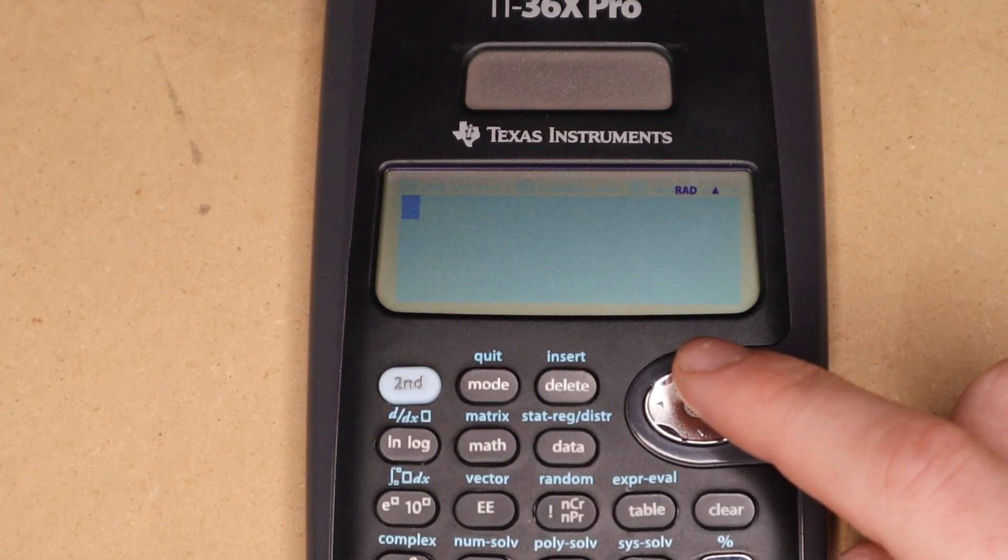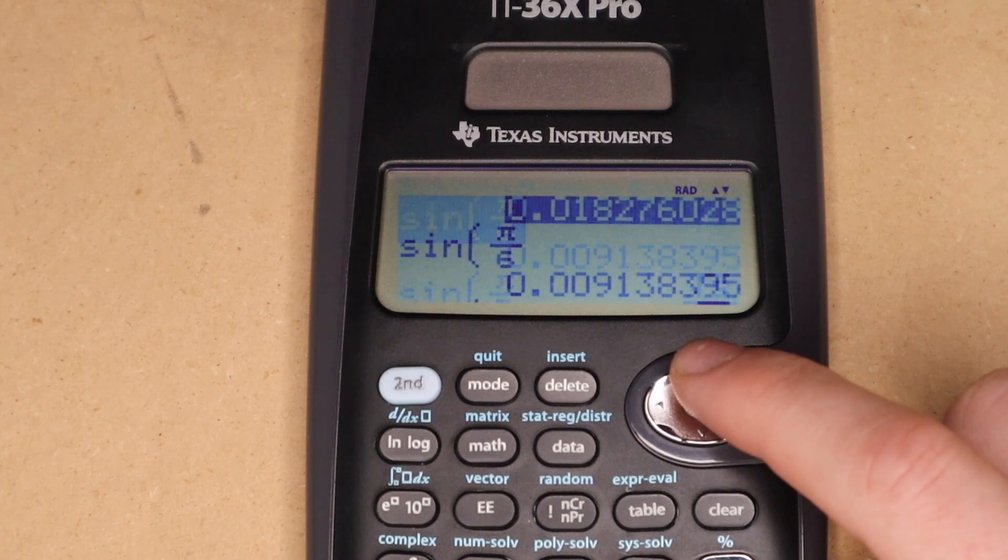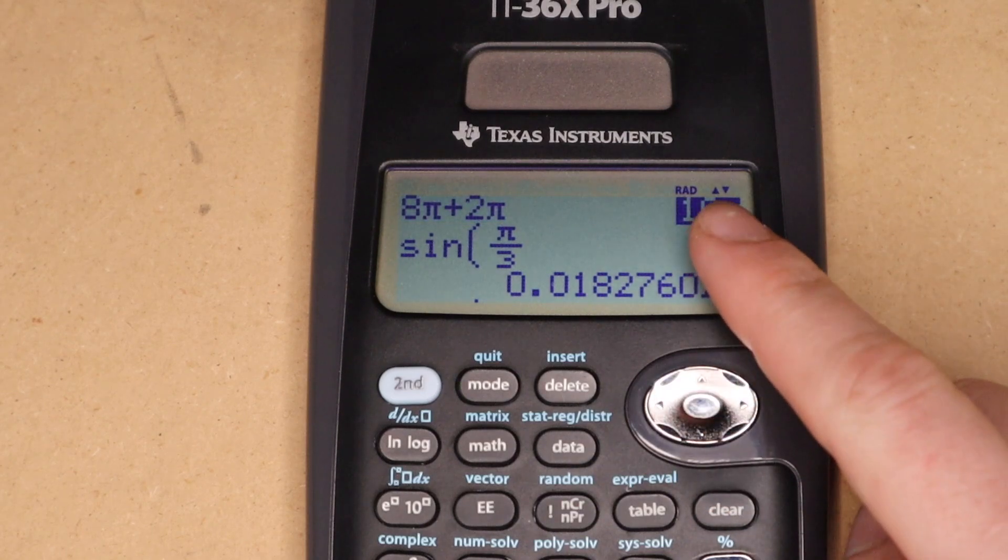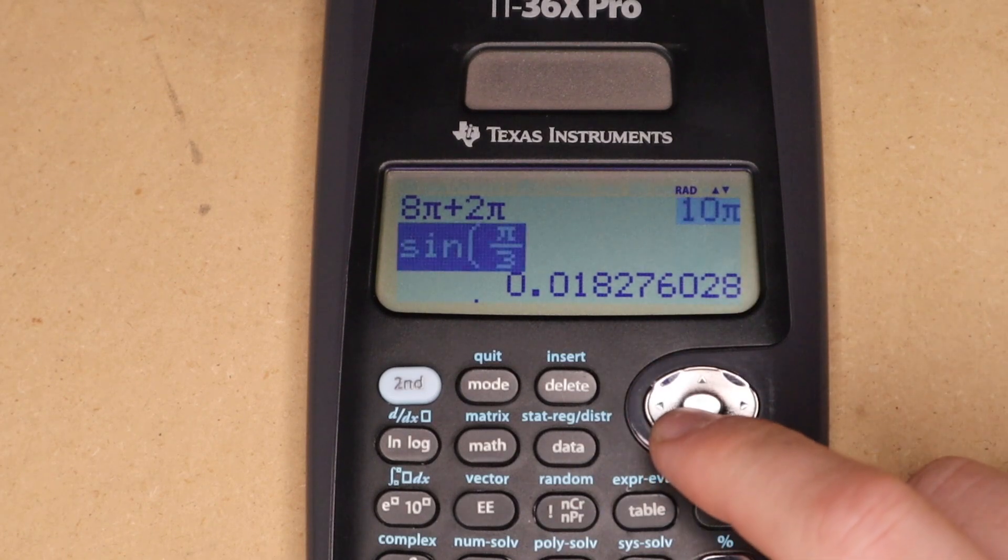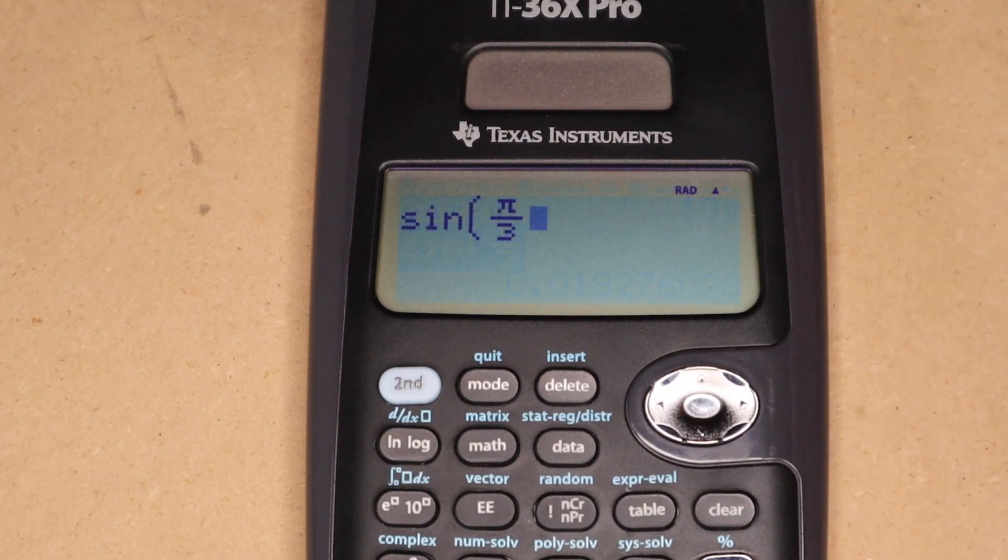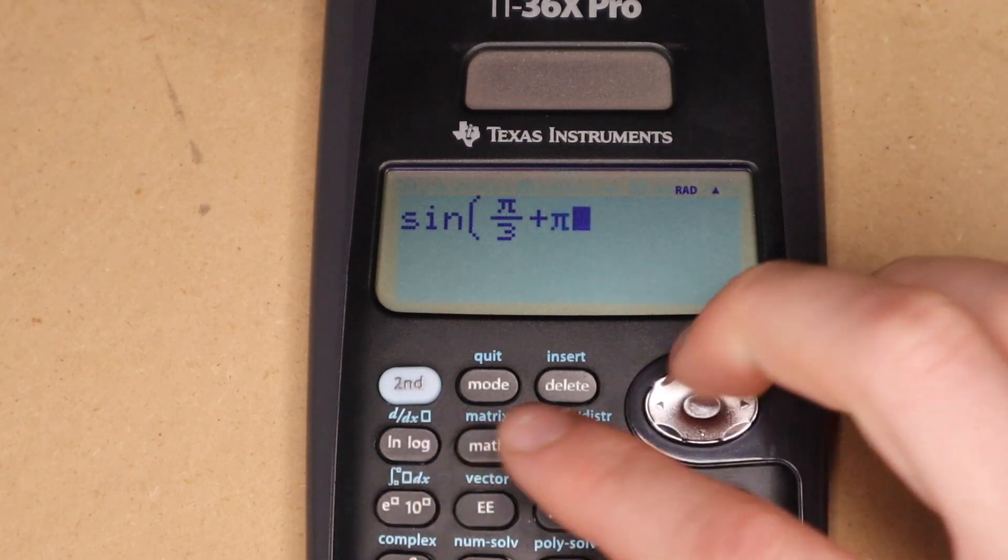And then all of your calculation history will end up piling up above here, and you can just press the up arrow to scroll through it all. And then if you see any value you want to re-enter, you can either pick the answer or the original expression that you entered, and then just press the enter key while it's selected, and it'll bring it down so that you can perform more operations on it.